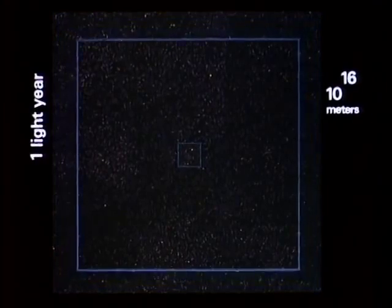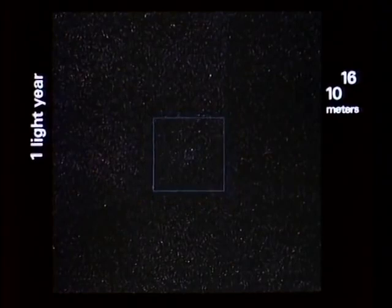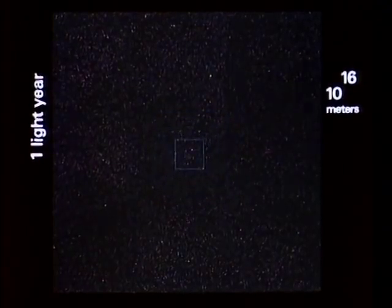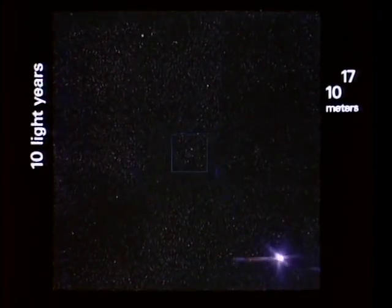This square is 10 to the 16th meters, one light year, not yet out to the next star. Our last 10 second step took us 10 light years further, the next will be a hundred. Our perspective changes so much in each step now that even the background stars will appear to converge.